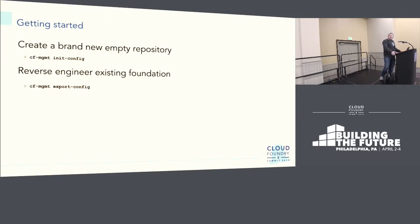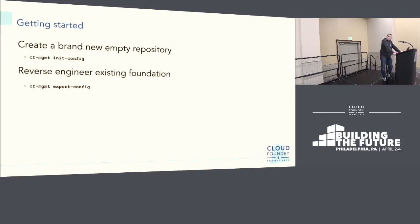How do you get started with CF management? There are two different ways. You can use the CF management CLI and say "initialize my configuration" — it will bootstrap you and create a configuration folder with YAML files in folders and structures. Or, to speed up the bootstrapping process, if you've already been running Cloud Foundry, you don't want to manually reverse engineer your configuration into YAML format. We can look at the APIs and introspect those to reverse engineer your configuration.